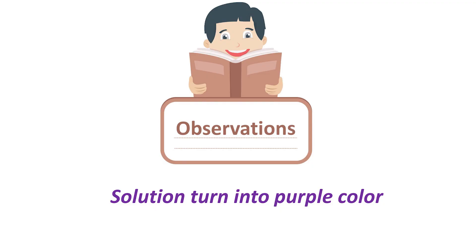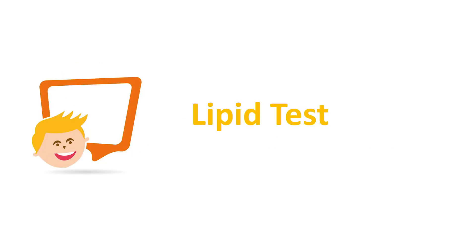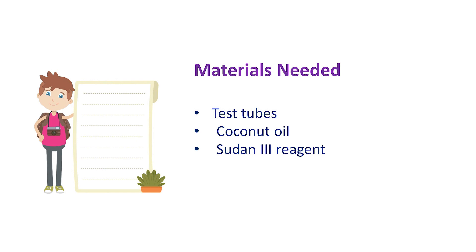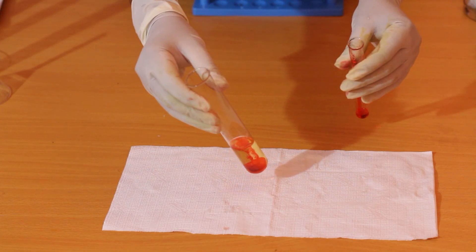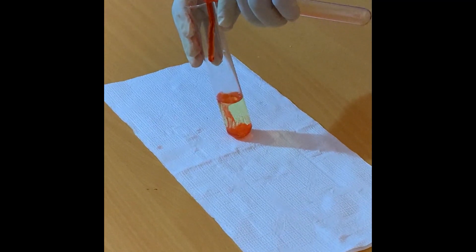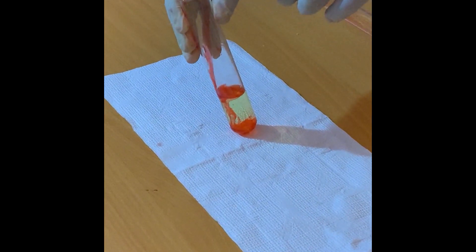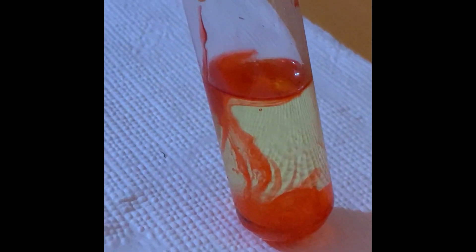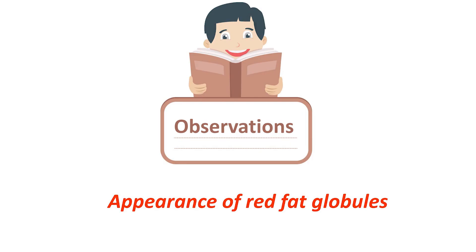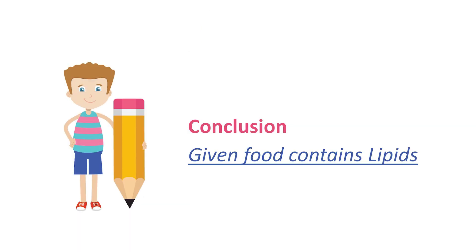We observed that the solution turned into purple color, so we can conclude that the food contains proteins. Our next practical is the lipid test. We need test tubes, coconut oil, and the Sudan 3 reagent. We take coconut oil into a test tube and then add the Sudan 3 reagent. You have to observe that the fat globules in the solution are becoming red in color. The observation is that there are red fat globules in the test tube, so the conclusion is that the given food contains lipids.